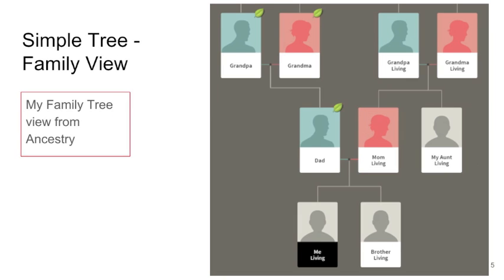The other standard view is a family view. Both of these views are in Ancestry.com. The family view also shows children, but both of these views can hide what we call the inner branches. For genealogy, these trees are adequate. But for looking for missing family members, you need to identify all of the offspring of every generation and their spouses.